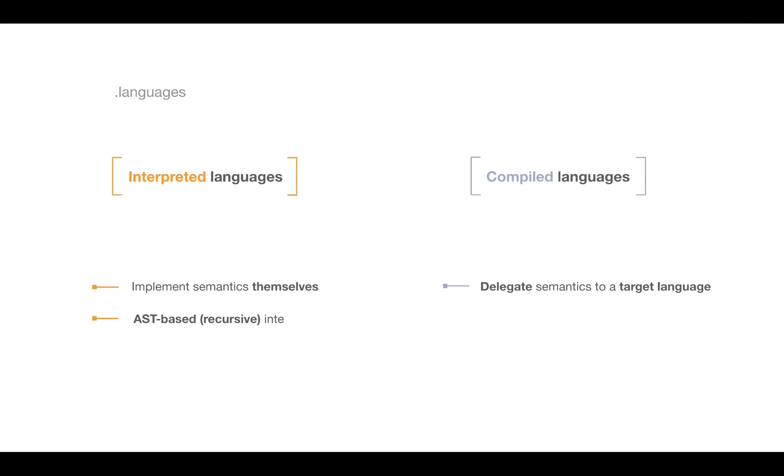And for interpreters, we have two main types. These are AST-based or recursive interpreters, and bytecode interpreters, also known as virtual machines. Now the only difference here is in the format of the program itself. In case of the AST-based interpreter, it's a tree-like data structure, and in bytecode interpreter it's a plain array of encoded instructions, which are closer to real machines. That's why these interpreters are known as virtual machines.